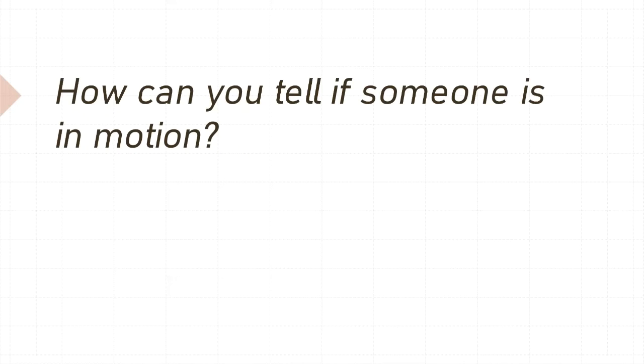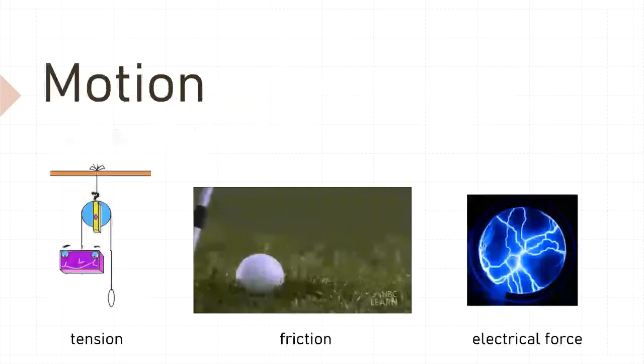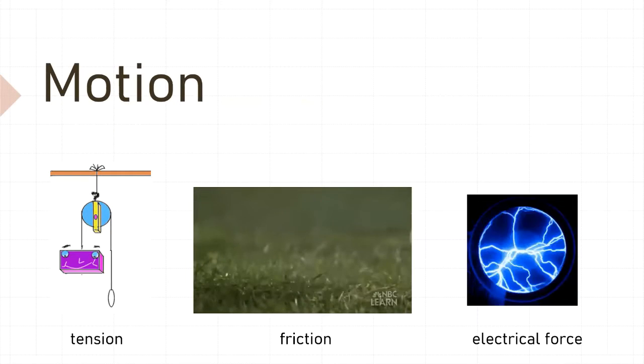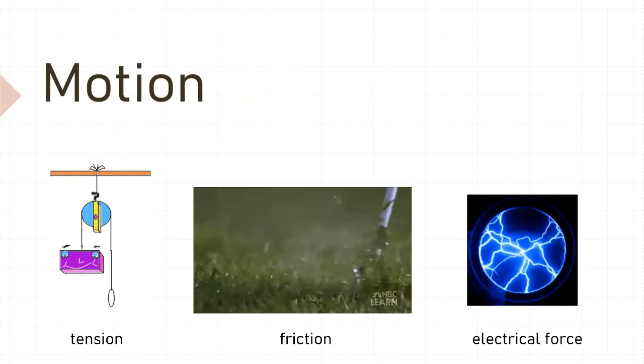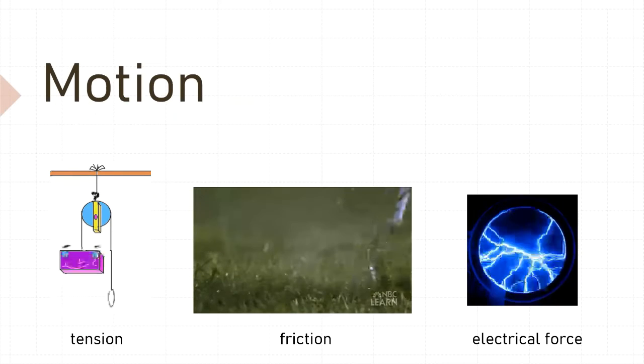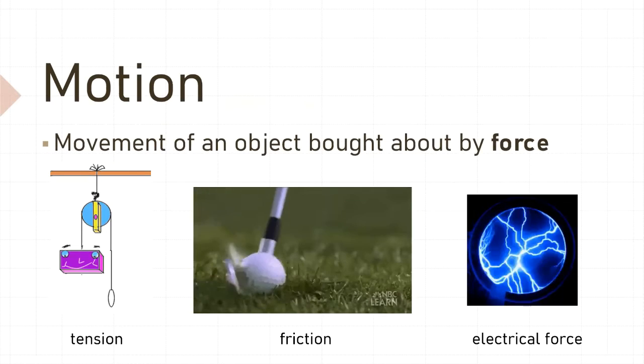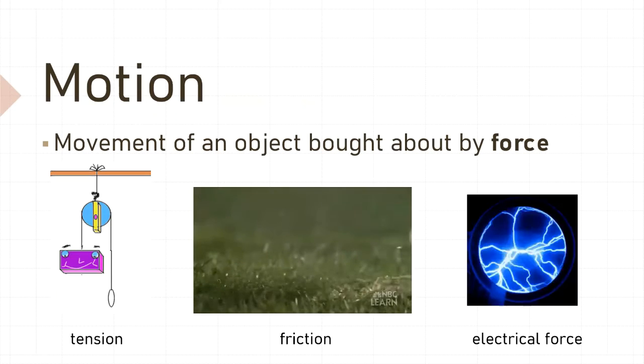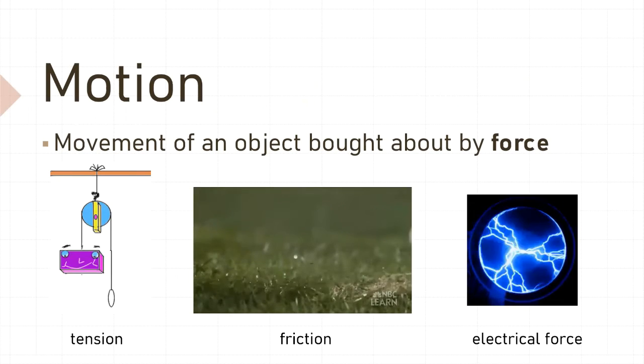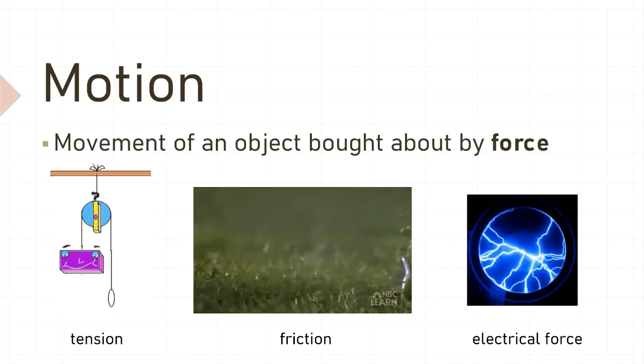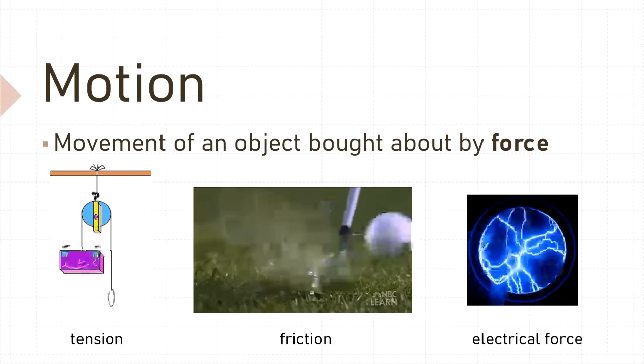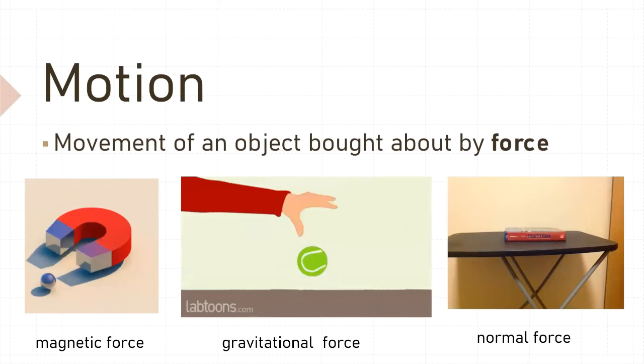How can you tell if someone is in motion? Motion may be defined as movement of an object brought about by force. They are tension, friction, electrical force, magnetic force, gravitational force, and normal force.